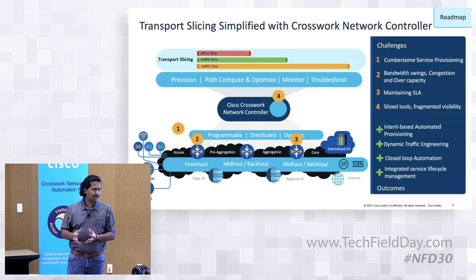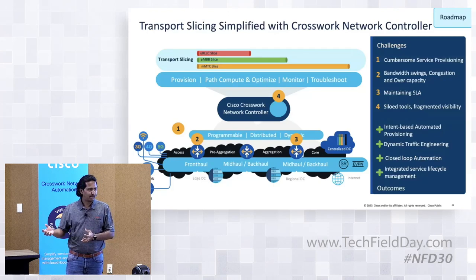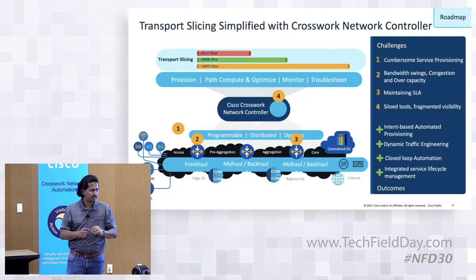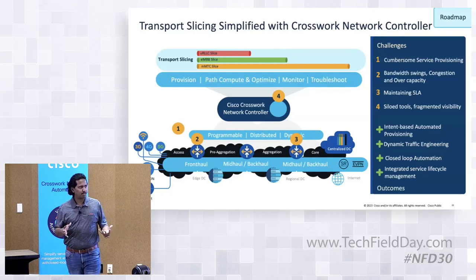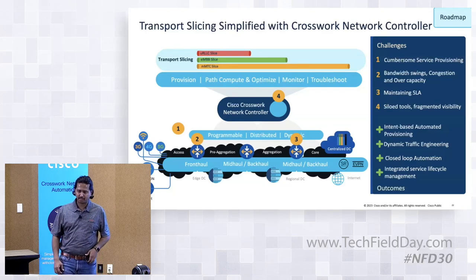Ultra-low-latency reliable, or URLLC — ultra-reliable low-latency communication — means give me the path that uses minimum latency. Or even on the bandwidth side: I want a path which uses bandwidth for a specific amount of network speeds. Those are the requirements coming from the slicing field — end-to-end slicing, mobile network slicing — and transport slicing is so important for that.